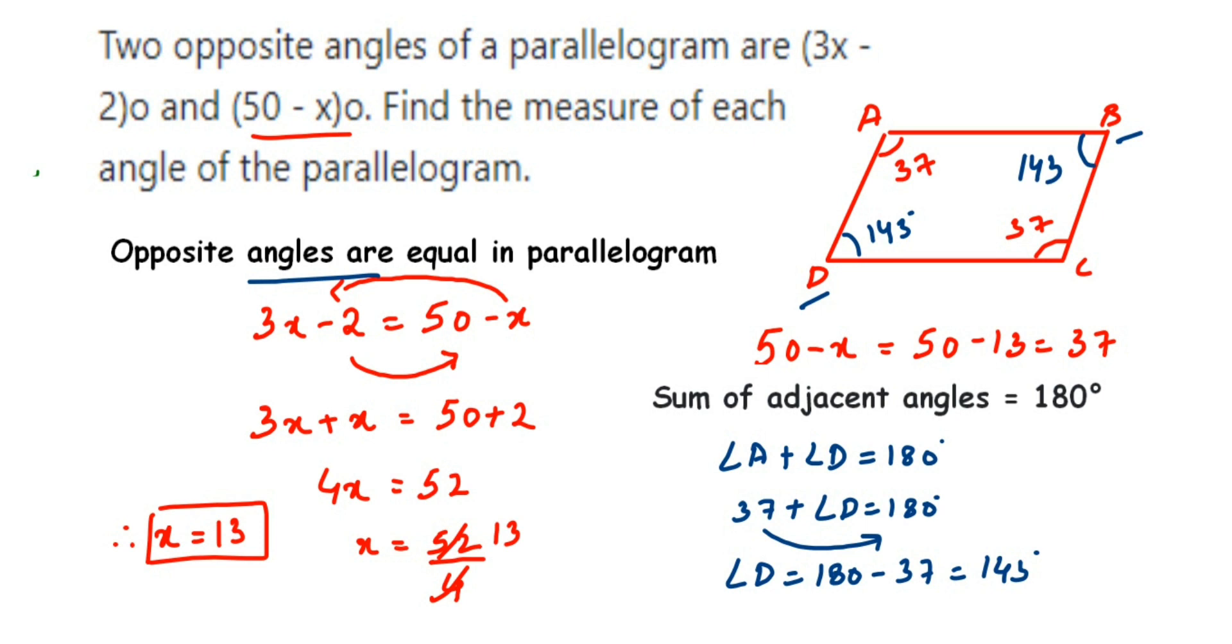That's how we got all the angles. The measure of each angle will be 37°, 37°, 143°, and 143° - two angles are 37° and two angles are 143°. I hope this question is clear. If you have any other questions or doubts, you can drop a comment. Thank you so much for watching.